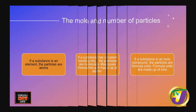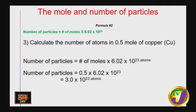Here is the second formula: number of particles = number of moles × 6.02 × 10²³. To calculate the number of atoms in 0.5 mol of copper: number of particles = 0.5 × 6.02 × 10²³ = 3.0 × 10²³ copper atoms. Just plug your values into the formula.